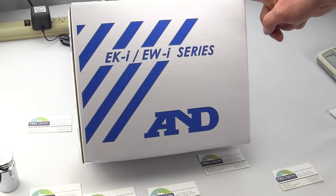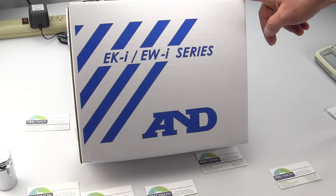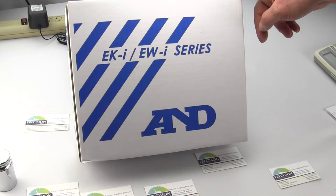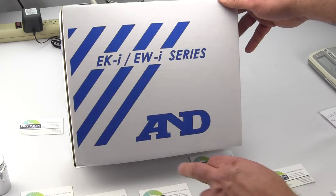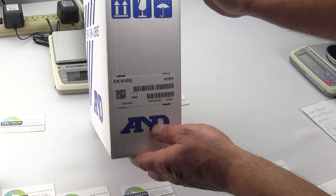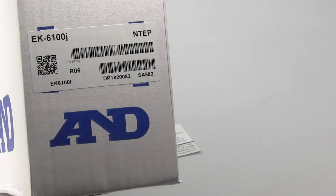In this video we're going to be showing you and unboxing an EK6100J electronic digital scale. You can see A&D delivers this in a simple cardboard box with the A&D logo. Each unit is serialized and the model number is marked. So we have here again EK6100J and the serial number is right here.